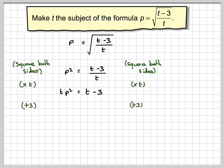Right, then I'm going to add 3 to both sides. Adding 3 will give me 3 plus tp squared is equal to t.